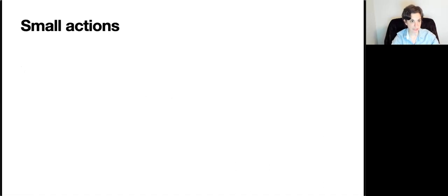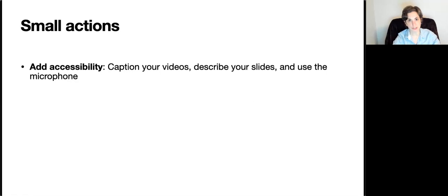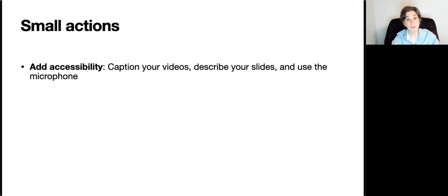I promised you small actions and big actions. Let's start with small actions you can put into place independently. One way is to add accessibility to your presentations and work. For example, add captions to your videos — you can do this on YouTube and it will help people who are hard of hearing or deaf. It also helps people who can't have the sound on. Similarly, when you present work, describe what you're showing on screen rather than just saying 'over here' or 'this one' — that helps people who are blind or low vision. And when we go back to presenting in person, please use the microphone even if you think you have a loud voice, because there are people who need it.